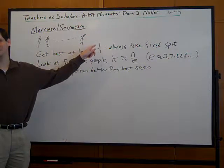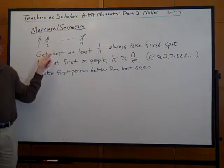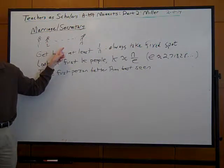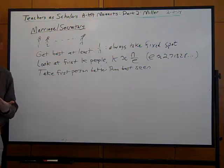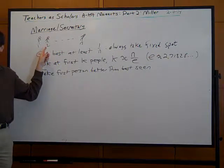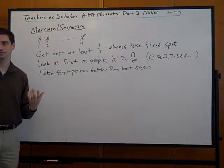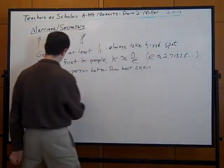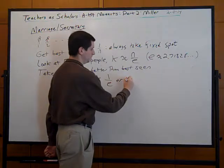Imagine people are ranked in increasing order - worst person first, best person last. If you use this strategy and the worst k people are in your sample, the first person better than the best you've seen is actually the worst of the remaining people - it's absolutely possible to end up with the worst remaining person. If the best person is in the first k, you'll end up with the last person because you never see anyone better.